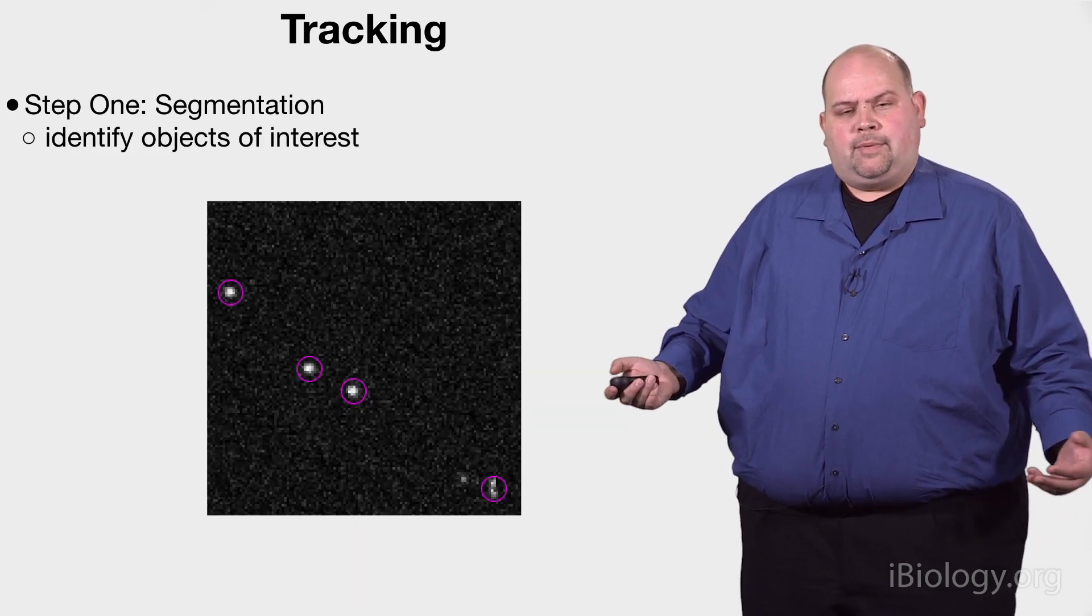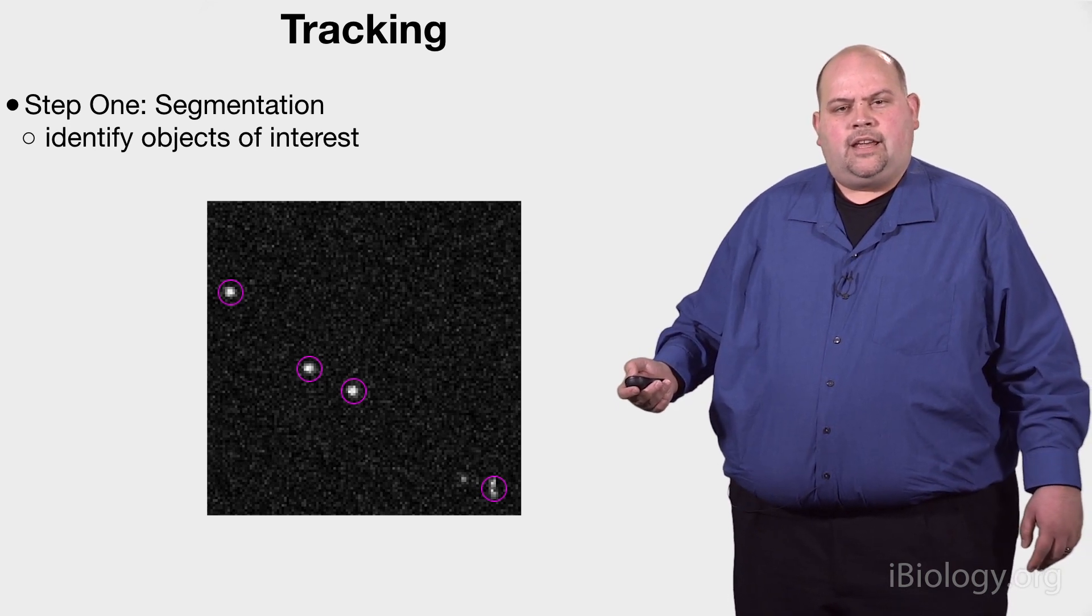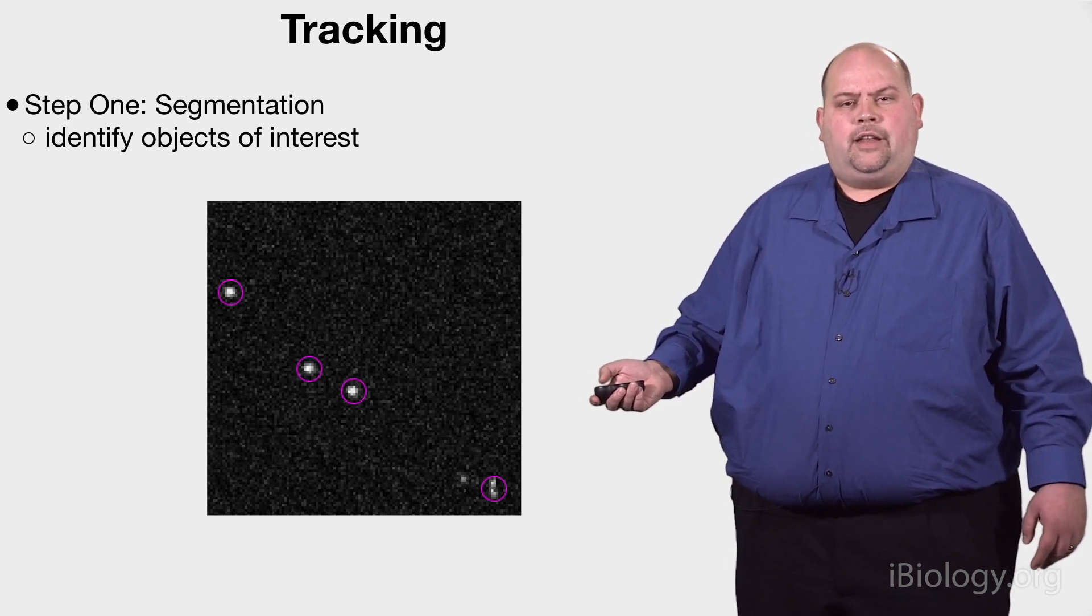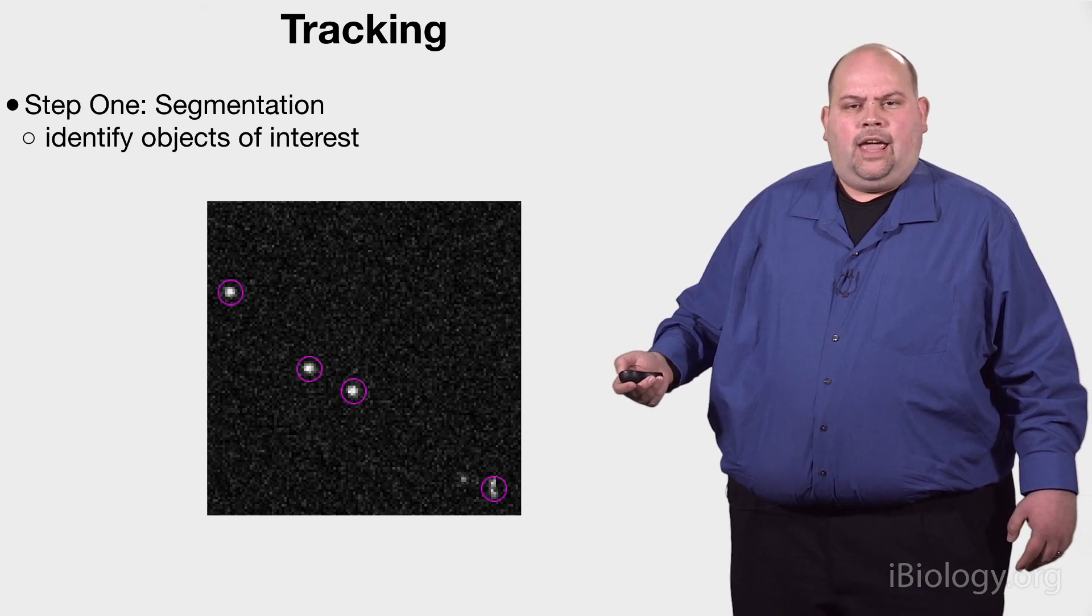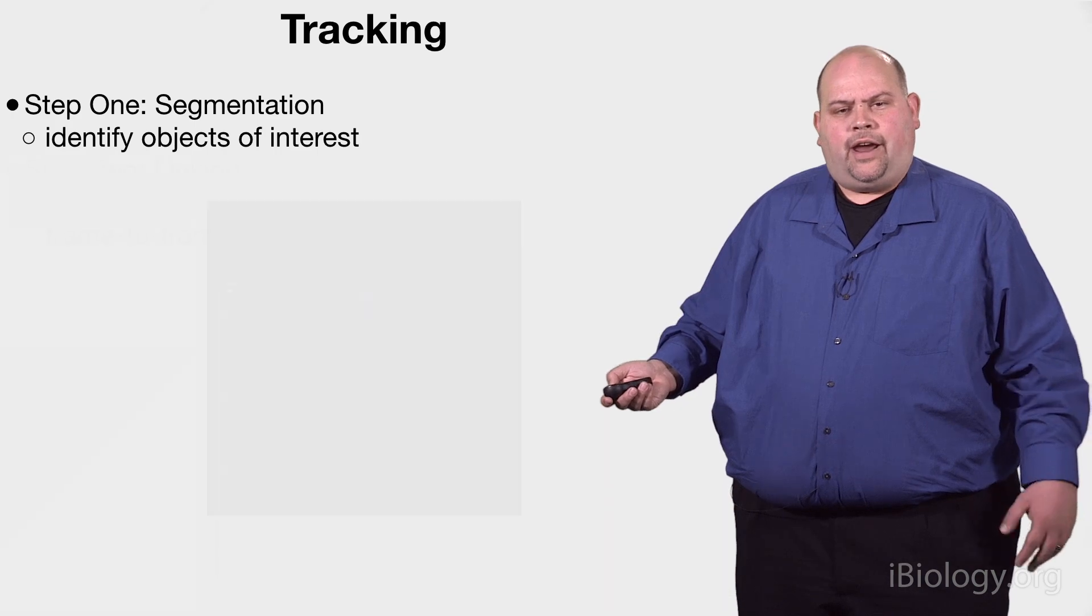One of the important steps, as my colleague Ann Carpenter talks about in our other series on segmentation, is how to identify objects of interest. The first step is to segment, and Ann covers that in some depth. The idea is to first identify the objects you want to then track.